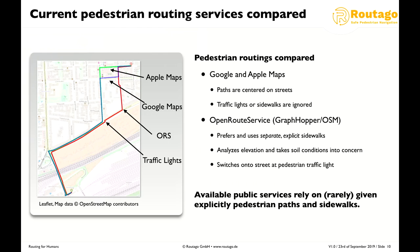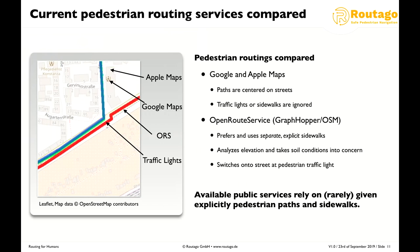Let's look at a proper benchmark problem in Karlsruhe. I compared routes proposed by Google Maps, Apple Maps, and the OpenRouteService, which relies on GraphHopper and OSM. Google and Apple Maps are centered on roads and don't think about where to cross. The OpenRouteService does much better — it even knows where traffic lights are. But looking closely, just at the point where there is a traffic light, instead of crossing the street, it proposes walking in the middle of the road from that point on.